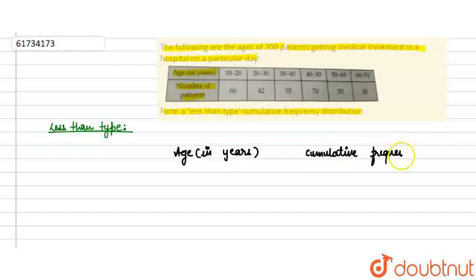Second important thing, जब more than type बनता है तो हम lower limit को use करते हैं और जब less than type बनता है upper limit. This is upper limit right side वाली. तो ages में आ जाहिए Less than 20, क्योंकि 10 से 20 है. Second में less than 30.